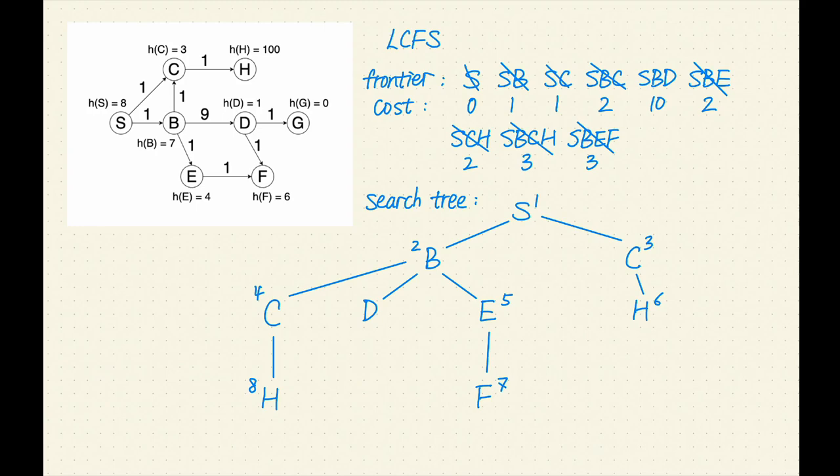SbD has the lowest cost. Let's remove SbD from the frontier. D is not a goal, let's expand it. D has two successors, F and G. Let's add SbDF and SbDG to the frontier, with costs of 11 for both.